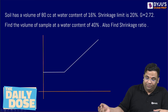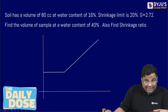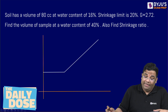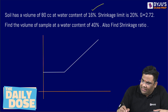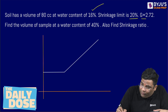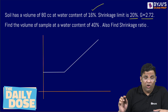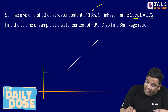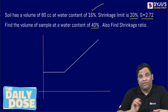The question is: soil has a volume of 80 centimeter cube at a water content of 16%. The shrinkage limit is 20%, and G is given as 2.72. We have to find the volume of the sample at a water content of 40%, and also find out the shrinkage ratio.